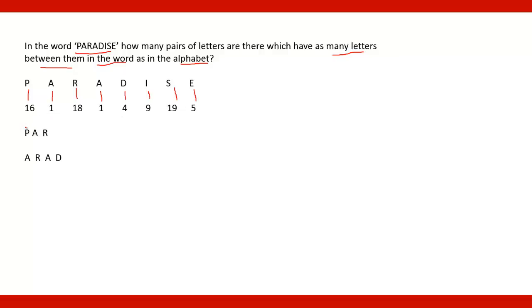Now see the pair P and R. What are the two numbers? 16 and 18. Between them there is one number that is 17. It means between P and R there is A, that is one letter, and between P and R in English alphabets also there is one letter. So one pair is P, R.